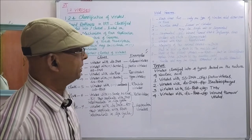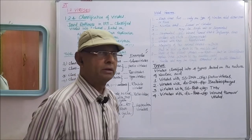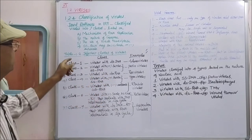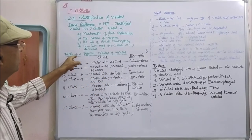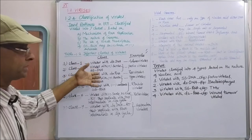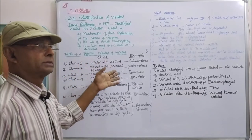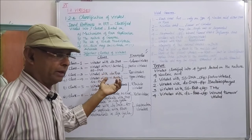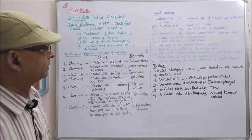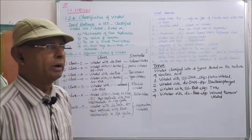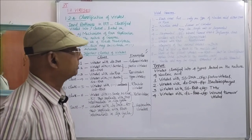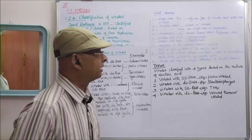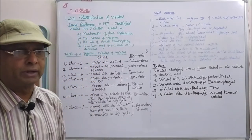Nucleic acid may be single-stranded or double-stranded. As seen in table 1.2, there are double-stranded and single-stranded forms: single-stranded RNA, double-stranded RNA, single-stranded DNA, and double-stranded DNA. So viruses may have nucleic acid that is either single-stranded or double-stranded.